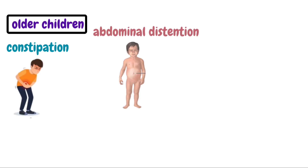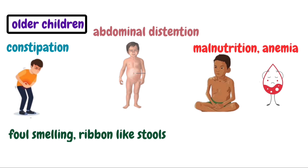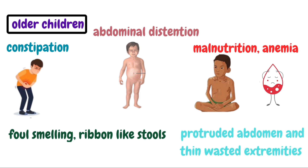In older children, Hirschsprung's disease is manifested by constipation with abdominal distension due to mass of feces and gas. When stools are passed, they may be foul-smelling and may be passed in pellet or ribbon-like form. Malnutrition and anemia can also develop due to malabsorption of nutrients. Protruded abdomen and thin-wasted extremities can also be seen.